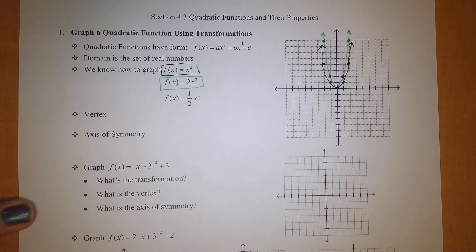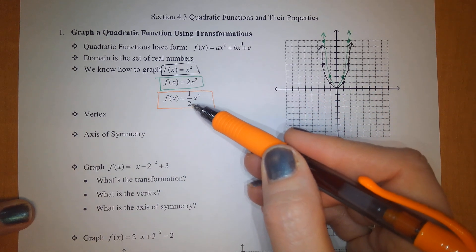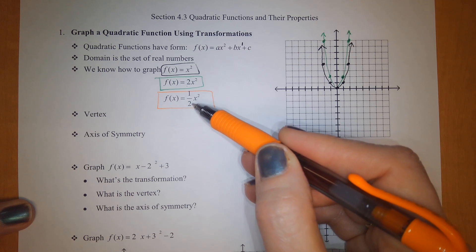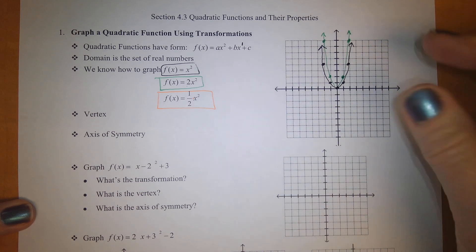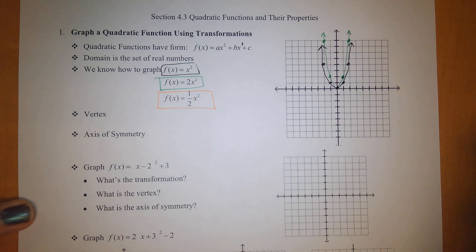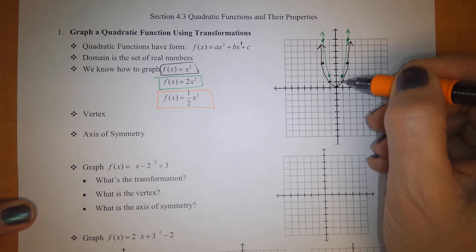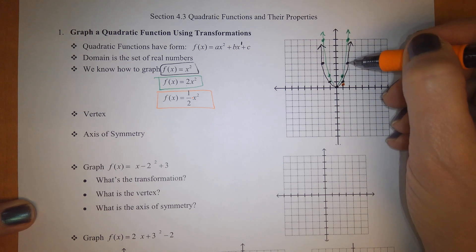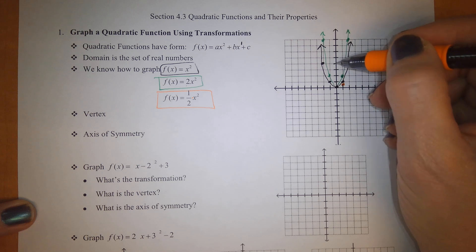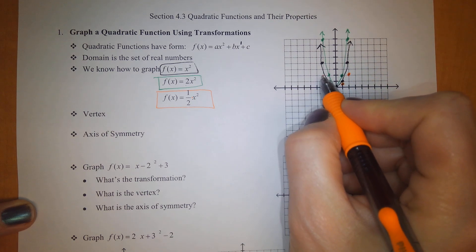We could also vertically compress this graph. A compression is a number multiplied in front of the function that is between 0 and 1 — any number multiplied between 0 and 1 is a compression. So we're going to take this graph and compress it to half of its size. The anchor point stays at (0, 0), and then the point at (1, 1) is now half of its height. The point at a y of 4 will now only be at a y of 2 — it gets compressed to half of its height — and of course this is symmetric over the y-axis.